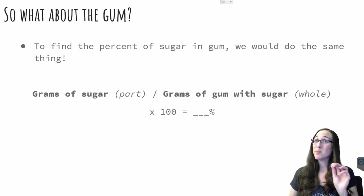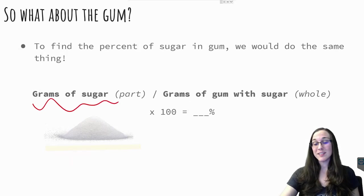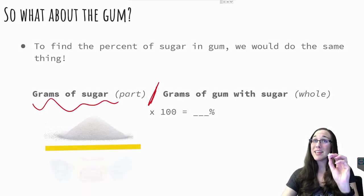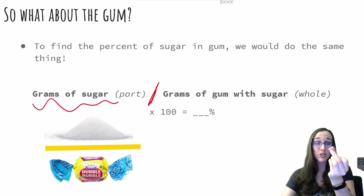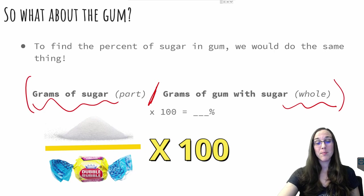So likewise, if we wanted to find the percent amount of sugar in bubblegum, we would do the same thing. We would just take the grams of sugar, that's the part, divide it by the grams of the entire piece of gum with the sugar still in it, that's the whole, multiply that whole thing by 100 to give us our percent value.